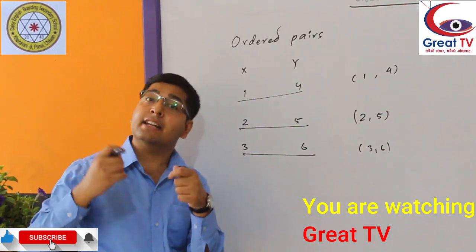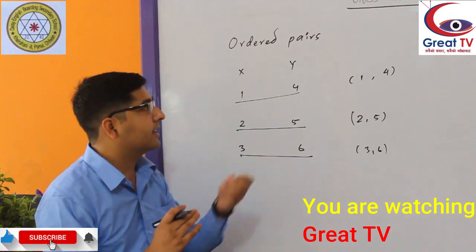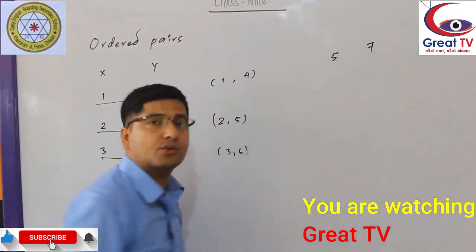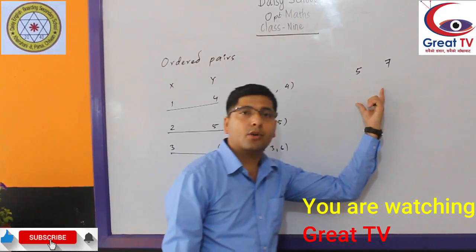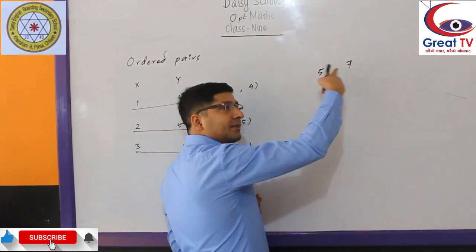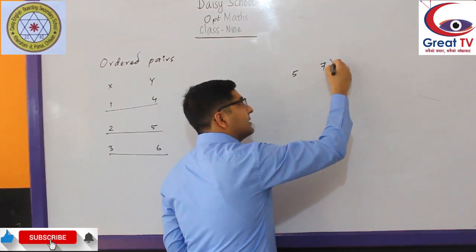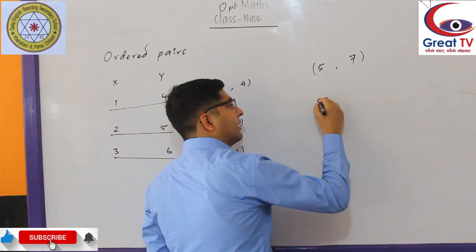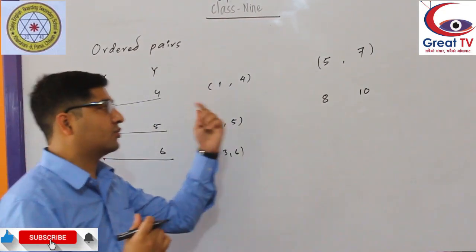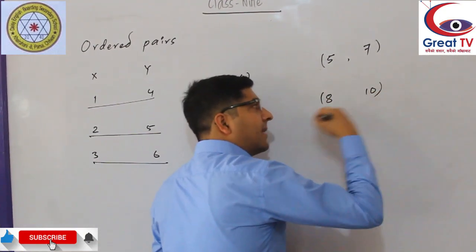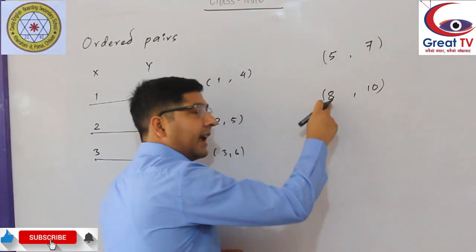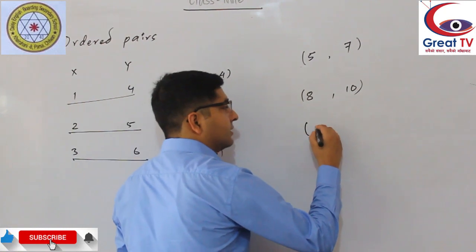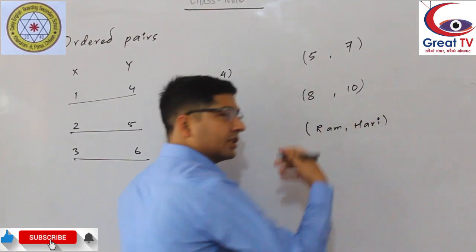Now I want to define an ordered pair. If we write any two numbers, any two mathematical objects, or any two objects inside small brackets separated by a comma, that is known as an ordered pair. For example, 5 and 7 — you just impose these two numbers inside small brackets with a comma: (8, 10). This is known as an ordered pair. You can also write mathematical objects, for example (Ram, Hari). This is also an example of an ordered pair.